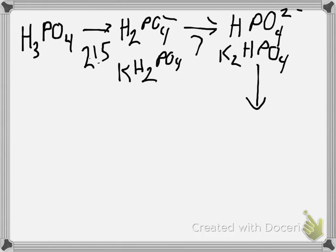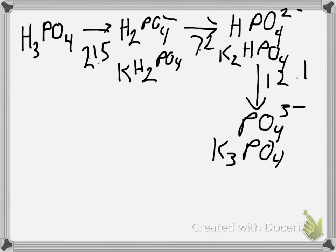Then, finally, we have the loss of the last proton, 7.2 now, I remember, 7.2, and then this one is 12 point, is it 12.1? It may not be 12. But this one dissociates then to PO₄ 3 minus. And the salt bottle that is on the shelf in my lab has K₃PO₄ as its formula.